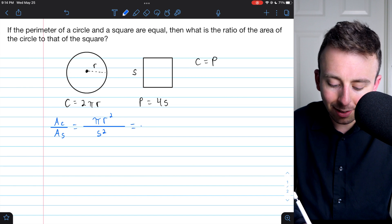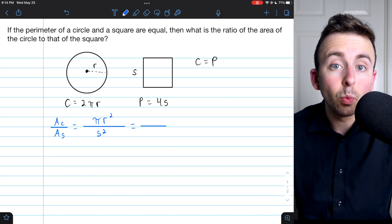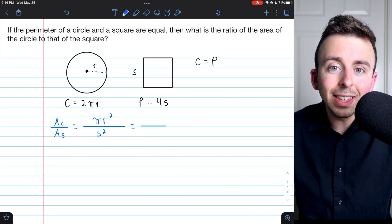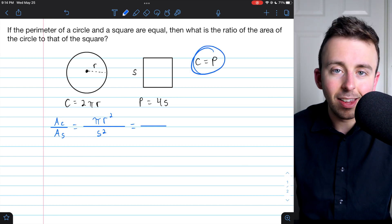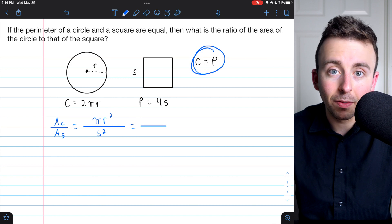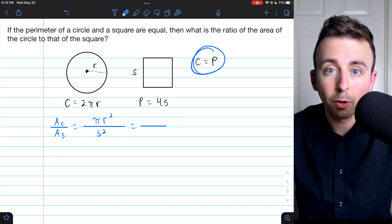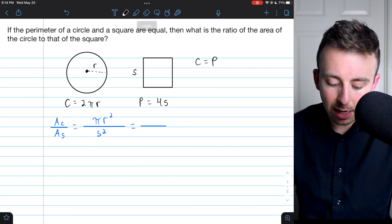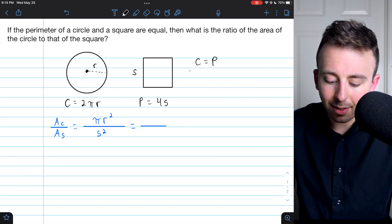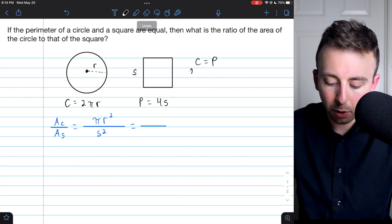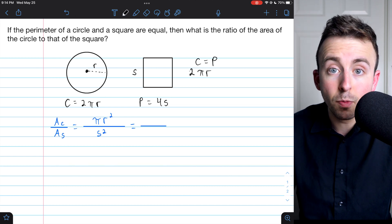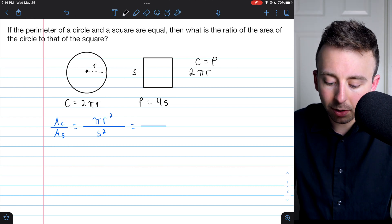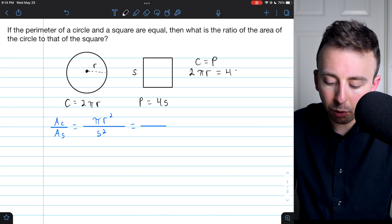Now, in order to actually simplify this to something that we can evaluate, we'll need to relate r and s using this equality, that the circumference of the circle equals the square's perimeter. So taking this equation, C equals P, we can replace the circumference and the perimeter with their values. So I can say the circumference, well, that's 2πr, and that equals the square's perimeter, which is 4s.